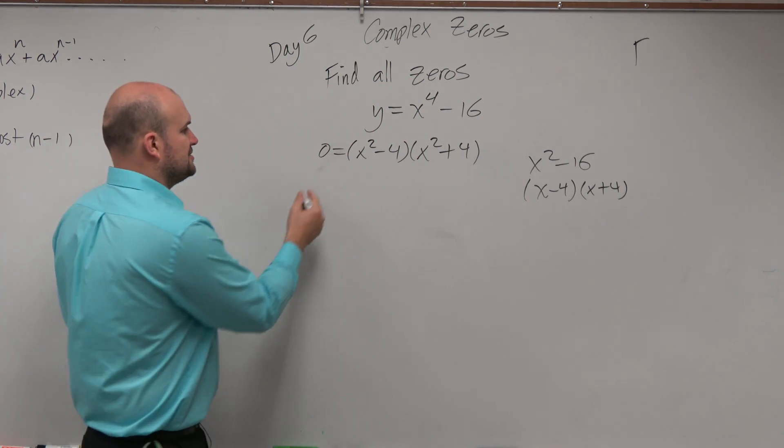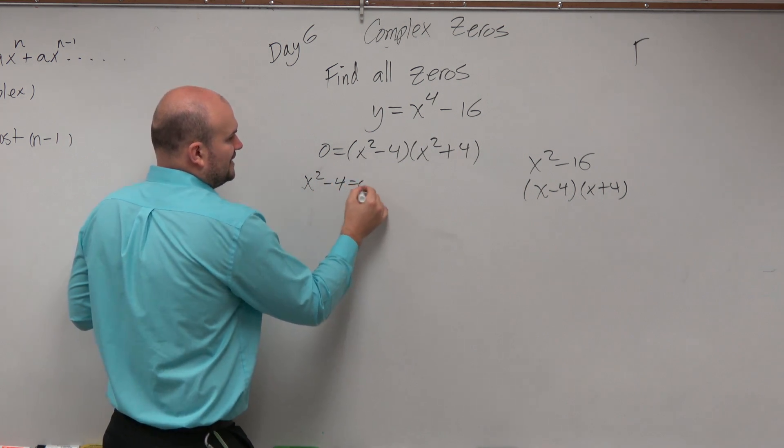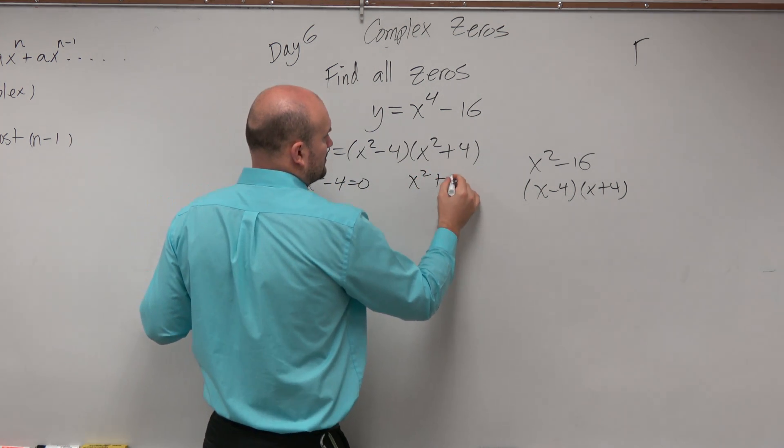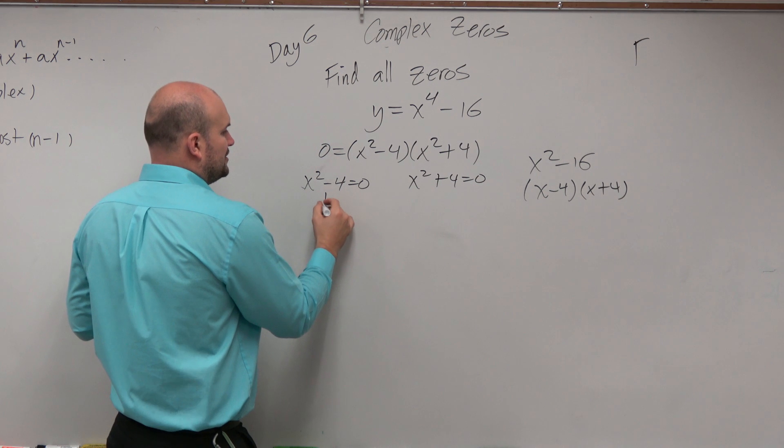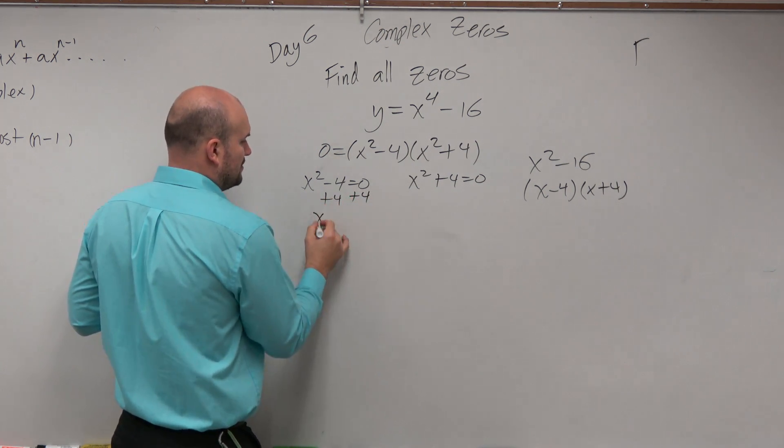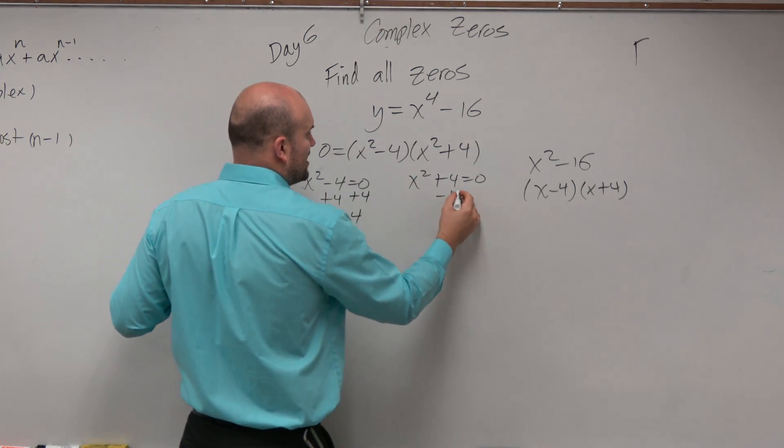So now I can just apply the zero product property to solve. I think that's the easiest way to solve these. And then you add 4, add 4. So x squared equals 4, subtract 4, subtract 4.